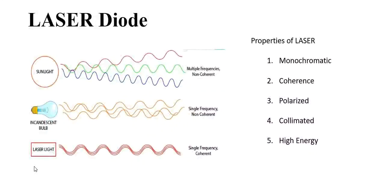What do you know about properties of light? It has various properties like dispersion, reflection, refraction. Does the laser radiation work in the same way? We are going to see about the properties of laser. Before that, we should compare the properties of three different materials. Here in the screen, you can see sunlight, incandescent bulb, and laser light.